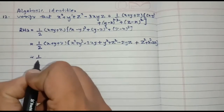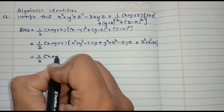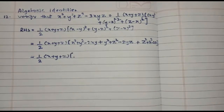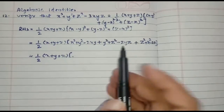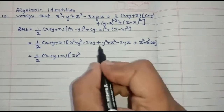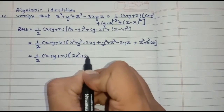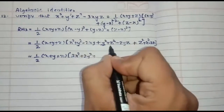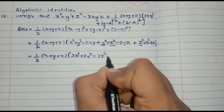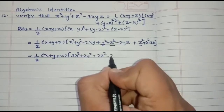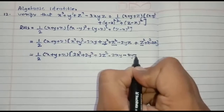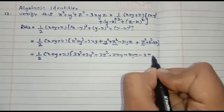Now 1 by 2 into x plus y plus z as it is. Collecting like terms: x square plus x square gives 2x square, y square plus y square gives 2y square, z square plus z square gives 2z square. Then the cross terms: minus 2xy minus 2yz minus 2zx.